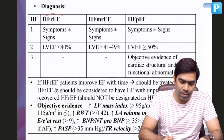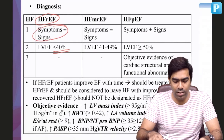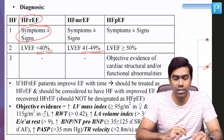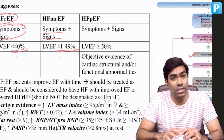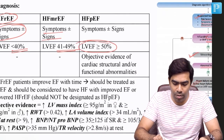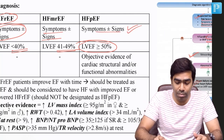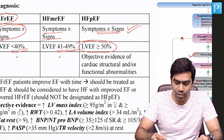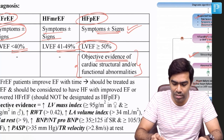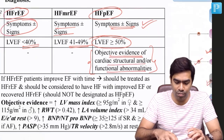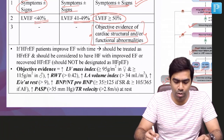In heart failure with reduced ejection fraction, the EF will be less than or equal to 40% and the patient will have symptoms and signs of heart failure. In mildly reduced ejection fraction, EF is in the range of 41 to 49%. In heart failure with preserved ejection fraction, the EF will be normal, so you will not be able to confirm heart failure from symptoms and signs alone. That is why there is a third criterion — you must have objective evidence of structural or functional abnormality, identified using echocardiogram.